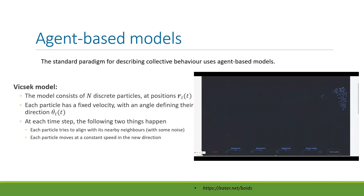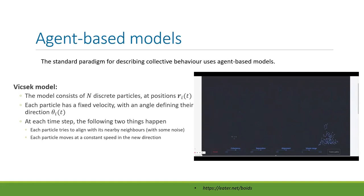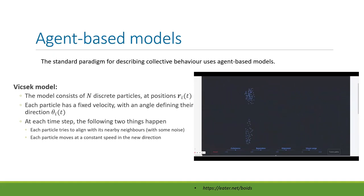In the Vicsek model or a variation of it, each particle is assigned a fixed velocity with an angle defining their direction. At each time step the angle and position get updated: each particle tries to align itself with nearby neighbors. There's some radius around itself, it looks at which direction neighbors are traveling, finds the average, and moves in that direction. You can see in the gif a simulation using these rules — it behaves pretty much exactly as normal flocks do, with polarization, clumping, and flocking.